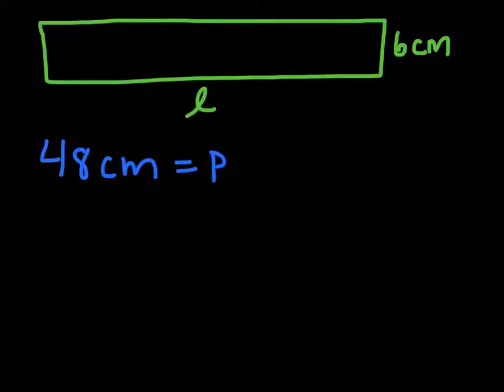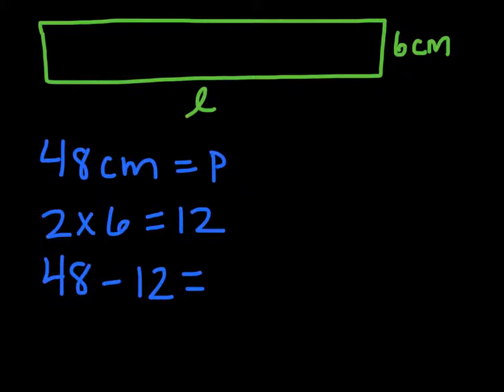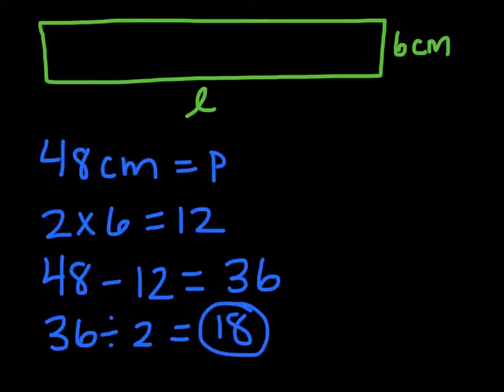We know that the perimeter is the sum of twice the length and twice the width. So we'll begin by finding twice the width. 2 times 6 equals 12. We know that our full perimeter is 48 centimeters. So we'll subtract 12 away from that to find out what twice our length is. So 48 minus 12 is 36. We'll then divide 36 by 2 to find the length, and that gives us an answer of 18. Our length is 18. This is how we would solve using arithmetic.